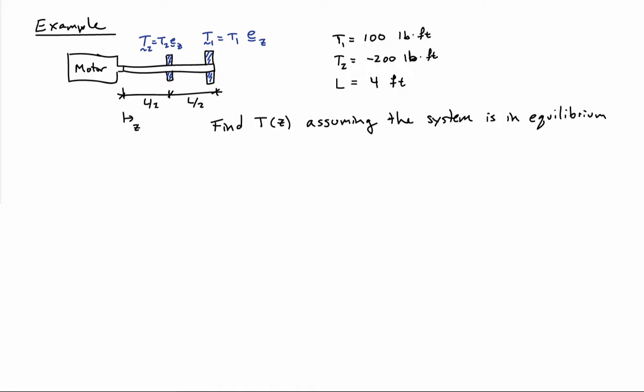As an example of equilibrium in bars under torsion, let's consider a drive shaft that's connected to a motor and to two gears, and the two gears apply different torques.